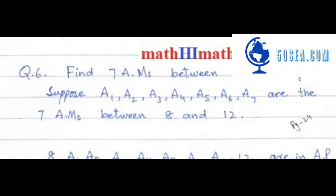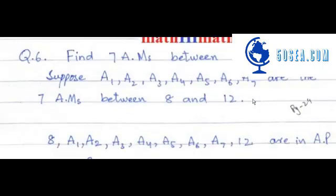We will insert 7 A.M. from A1 to A7. This method is the same way as we have practiced in 2-3 questions. You can put 8 on one side and 12 on the other side, and then 7 arithmetic means in between.